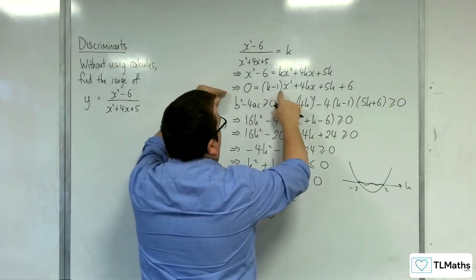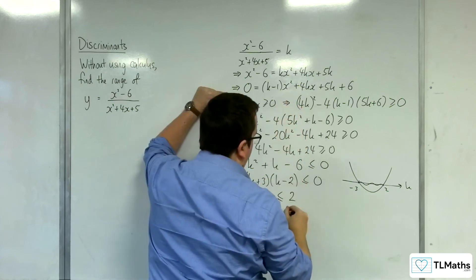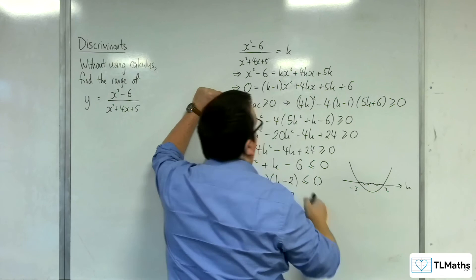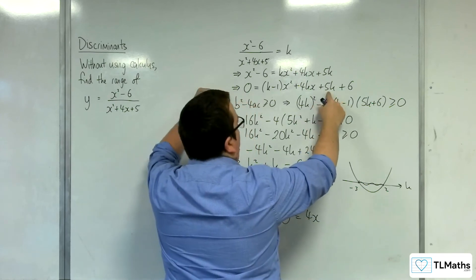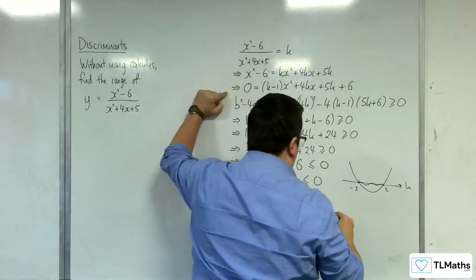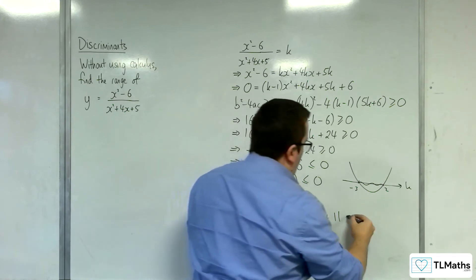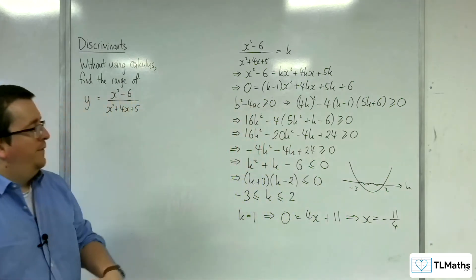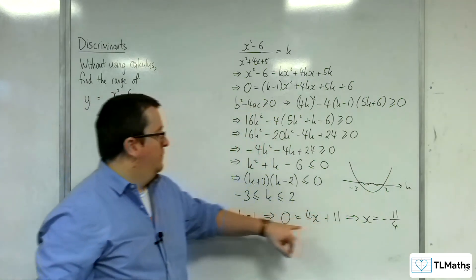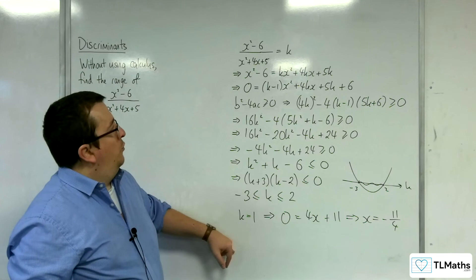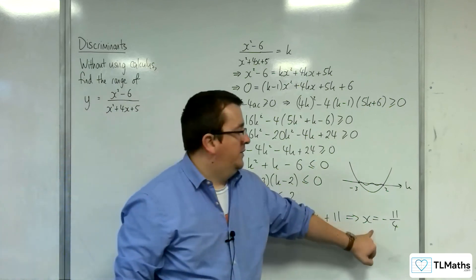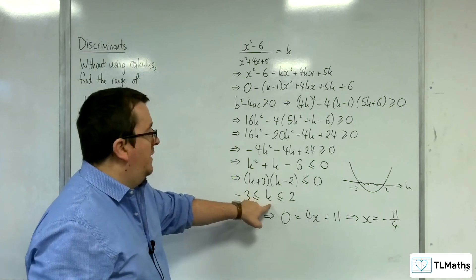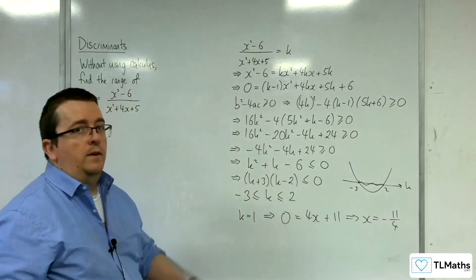So, if I substitute it in, we get 0x squared, then we've got 4x, and then we've got plus 5 plus 6, and so that's plus 11. And you can see then, x is equal to minus 11 quarters. So it just means that the curve is intersecting y equals 1 at one point, and that's fine, because that's in the region, k equals 1 is inside the region that we're considering. So that's okay.